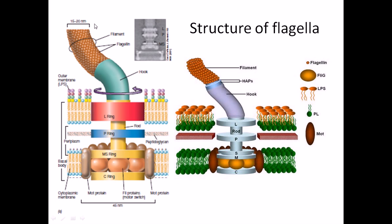Let's look at the left-hand side image first. Bacterial flagella are made up of flagellin proteins, instead of tubulin, because eukaryotic flagella are made up of tubulin. Bacterial flagella have two important sections: the rotor unit and the stator unit. The rotor unit helps the flagella move or rotate, and is designated by most of the ring-like structures. There are three major types of rings: the L ring, the P ring, and the MS ring, as you can see in the scanning electron microscope image.